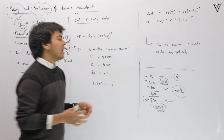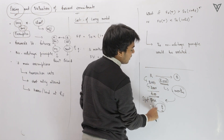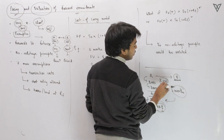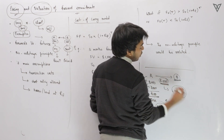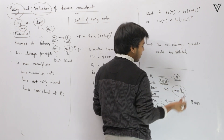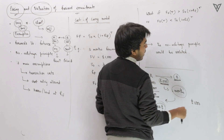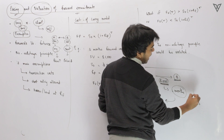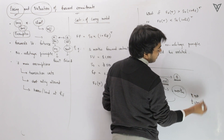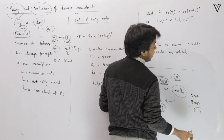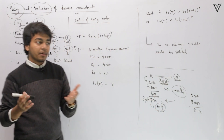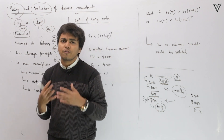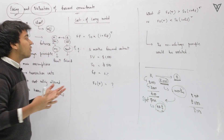If the prices had gone down to say $900, think from the perspective of B, who agreed to sell at $1,000 irrespective of the current market price. He would buy the asset at $900 from the market and sell it to A for $1,000, again gaining $100. So if the prices go up, the long party gains, and if the prices go down, the short party gains — this you must have understood well in level 1.